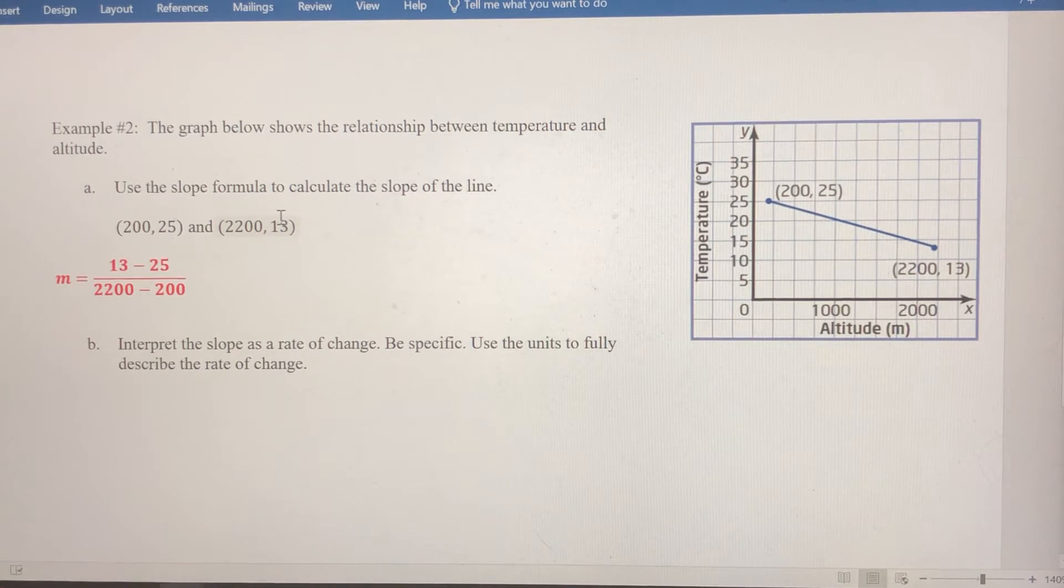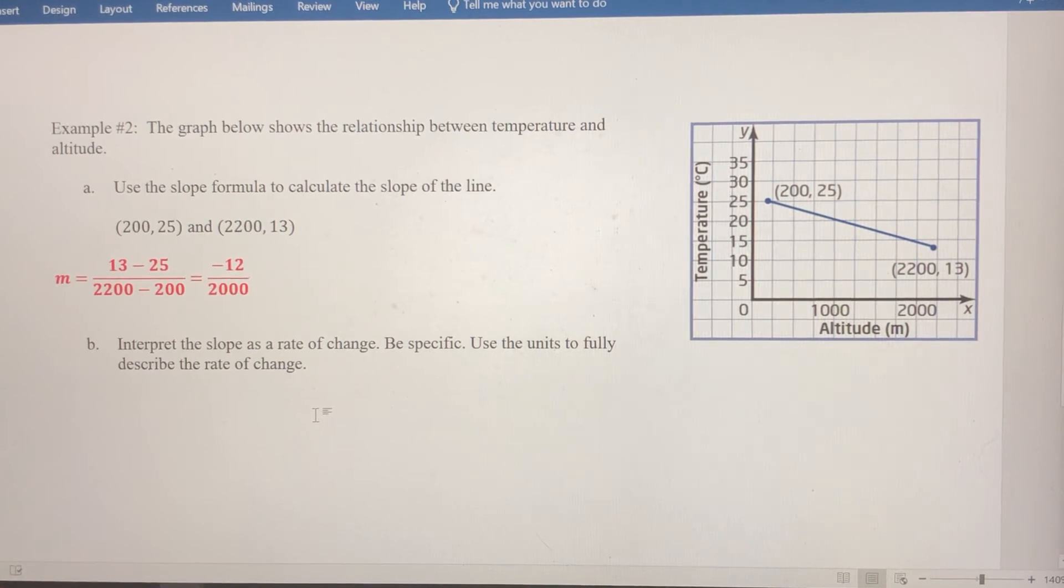So we want to subtract our y-coordinates, 13 minus 25 in the numerator. In the denominator, we're going to subtract our x-coordinates, 2200 minus 200. Let's simplify both. That gives us negative 12 over 2000.